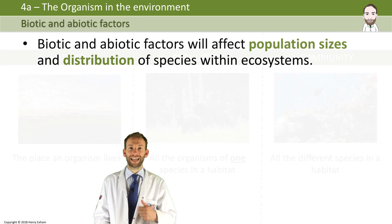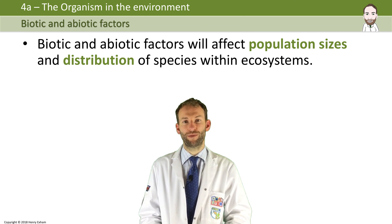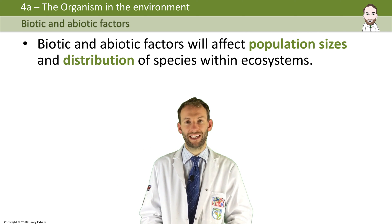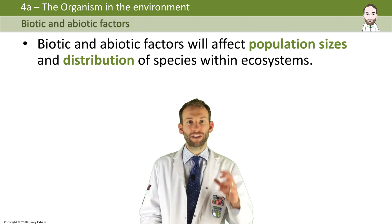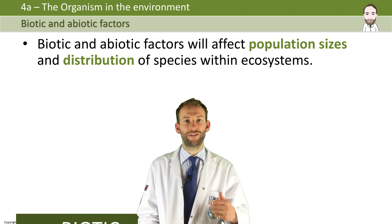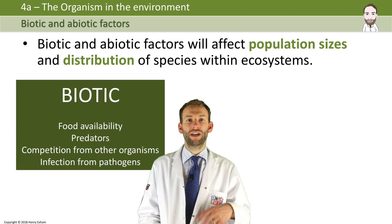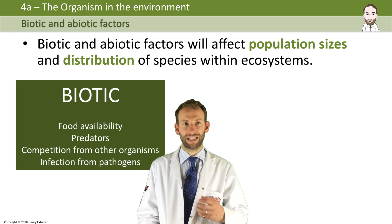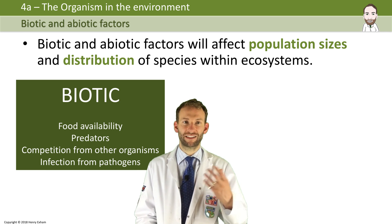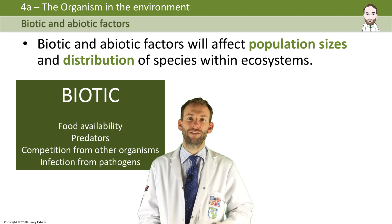Biotic and abiotic factors will affect population sizes and distribution of species within ecosystems. Biotic factors are things like food availability, predators, competition from other organisms, infection from pathogens — anything to do with biology. Any kind of living factor that can affect their survival.